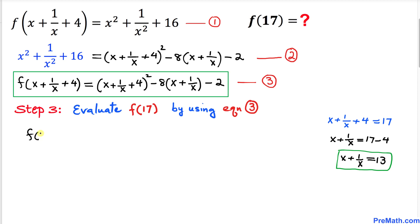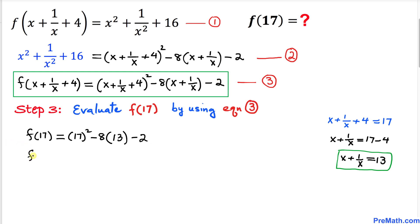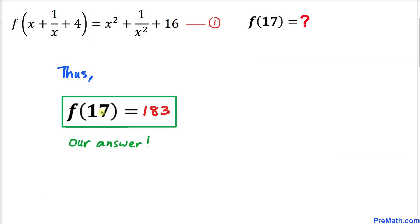So f of 17 equals 17² − 8·(x + 1/x) − 2. With x + 1/x = 13, this becomes 289 − 8·13 − 2 = 289 − 104 − 2 = 183. Thus our final answer is f(17) = 183. Thanks for watching and please don't forget to subscribe to my channel for more exciting videos.